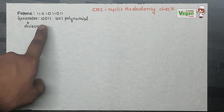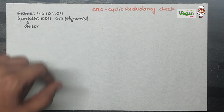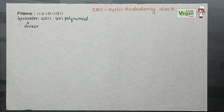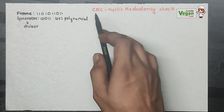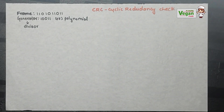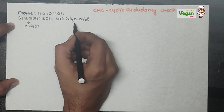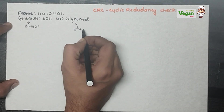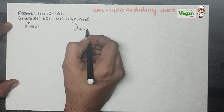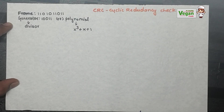If it is directly given in binary bit form, there is no need to convert. For example, if they give a polynomial form, let's take the example x³ + x + 1. This is the polynomial I am taking.